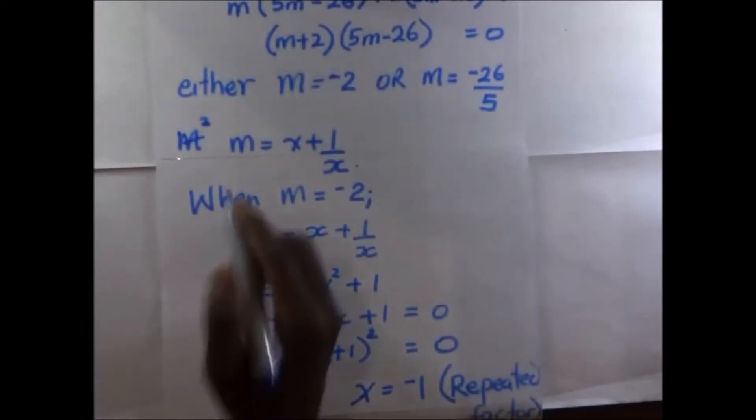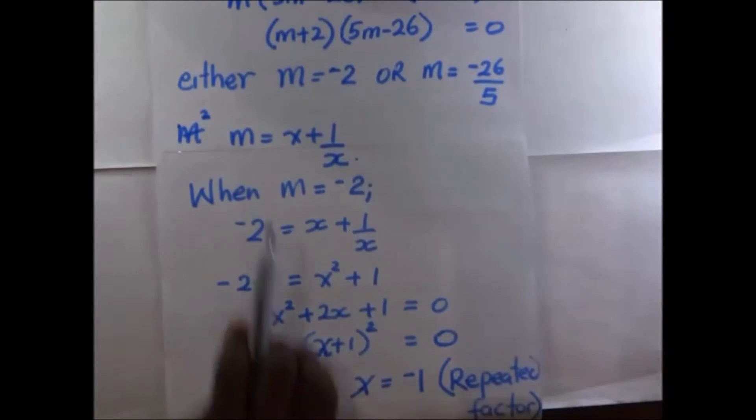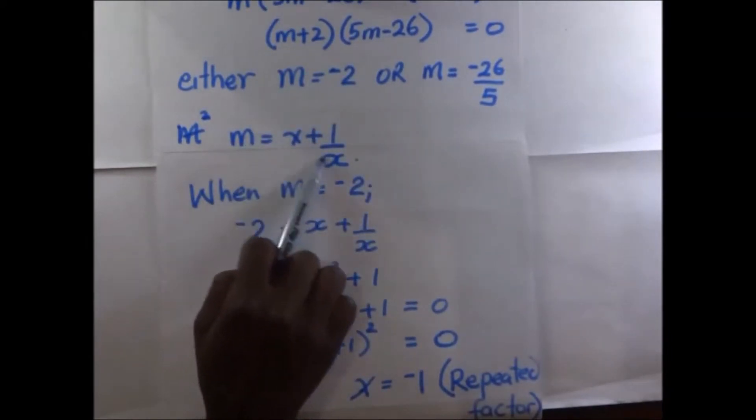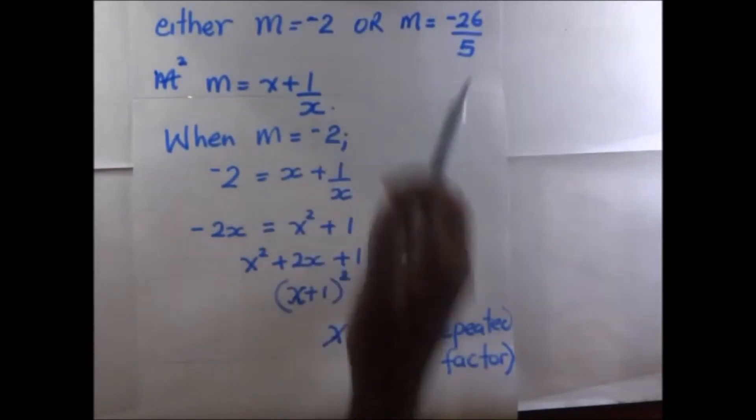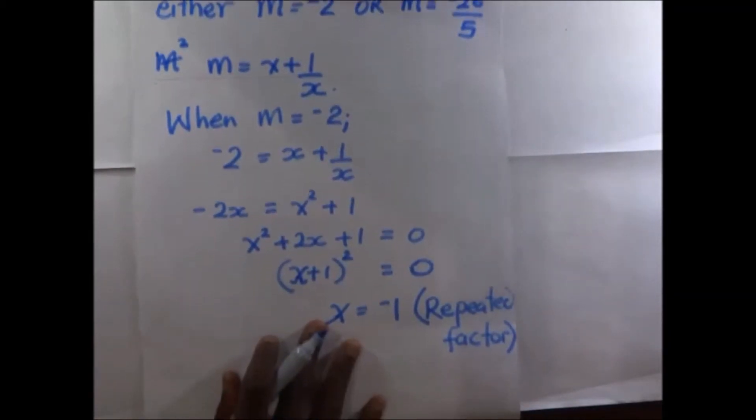So our first value of M was negative 2, and when our value of M is negative 2, put M here, our value of x we get is negative 1. So when M is negative 2 and 26 over 5, let's get the value of x that is corresponding.